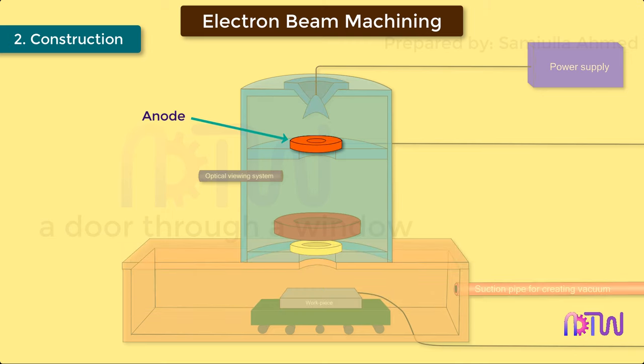Anode: Anode is connected to the positive bias, the electrons are pulled towards the anode at very high speed, and therefore, electrons produced by the cathode filament are not diverged from its path.